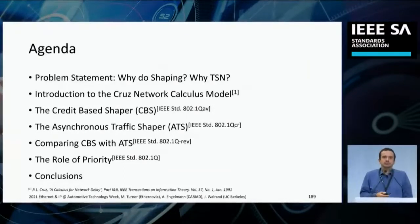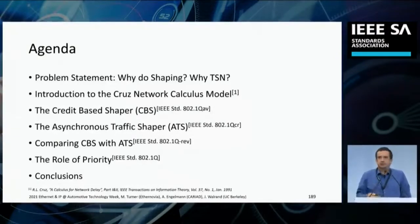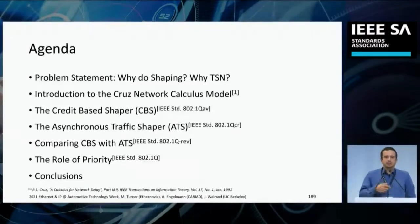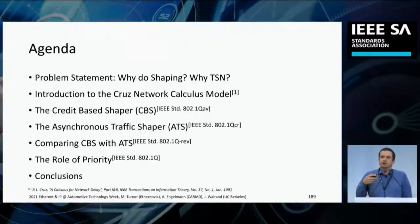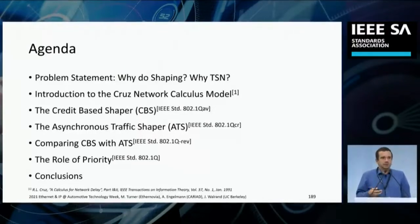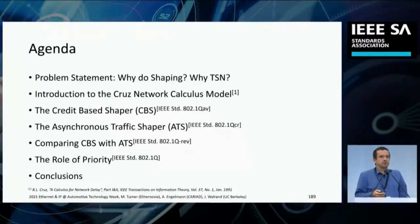We'll compare the credit-based shaper and the asynchronous traffic shaper, similarly to the previous talk. I'll give a few comments about the interaction with the time-aware shaper, and look at the role of priority — is priority really the thing we want to look at, or are there parameters that might be more important? We'll end with conclusions and hopefully a good discussion.